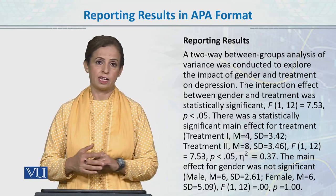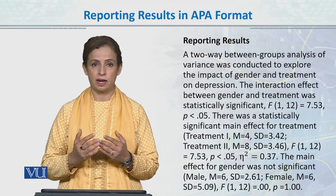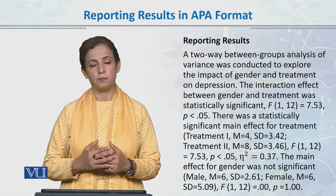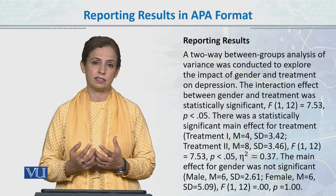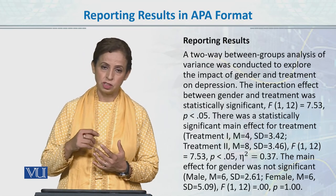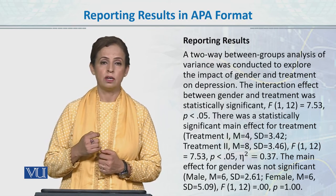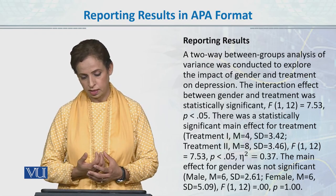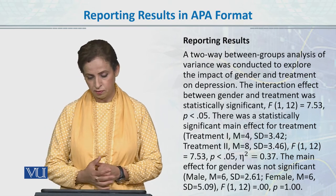Partial eta-square tells us the magnitude of the difference — for example, between treatment one and treatment two on depression scores. Sometimes when we have a large sample size, the difference can also be significant even when it is small. So partial eta-square is reported because it tells us about the magnitude or strength of the difference between groups or levels measured. Here, partial eta-square is 0.37, which is average.